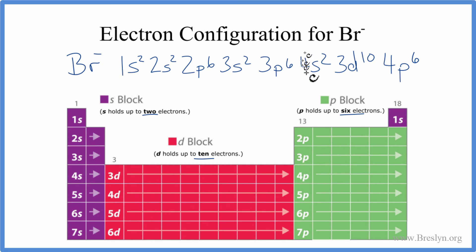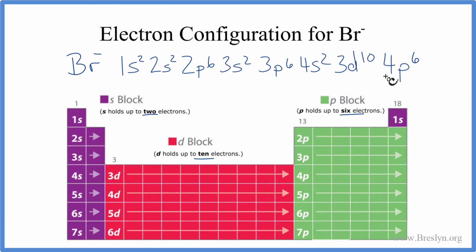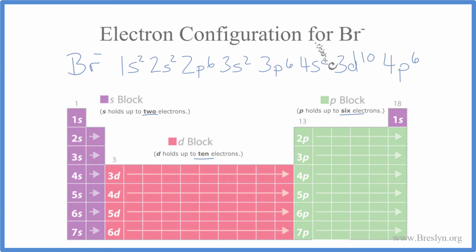You'll note that the 4s came before the 3d — that's okay. You'll actually see it written both ways, as these have very similar energy. This is traditionally what you'll see in a classroom setting. This is Dr. B with the electron configuration for Br⁻, the bromide ion. Thanks for watching.